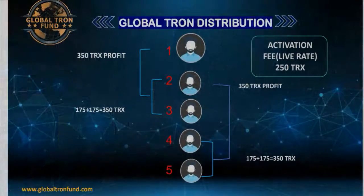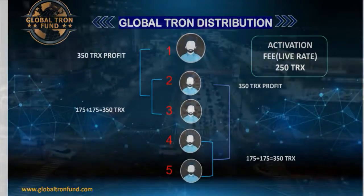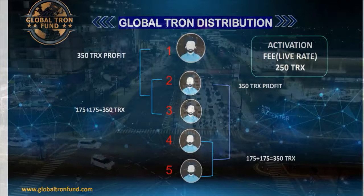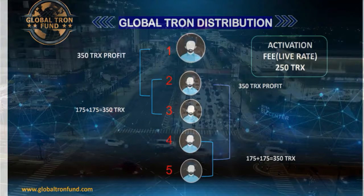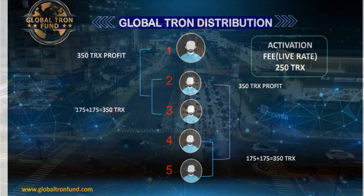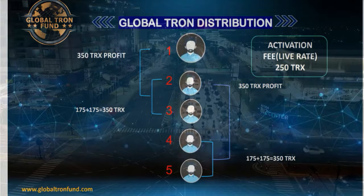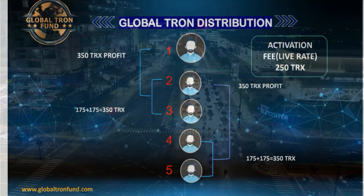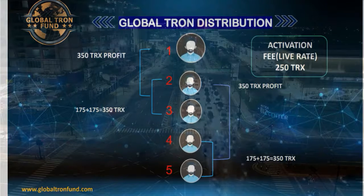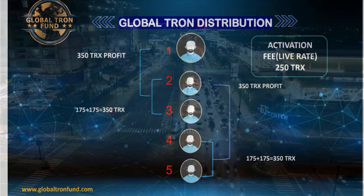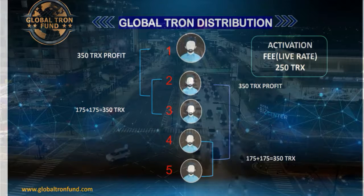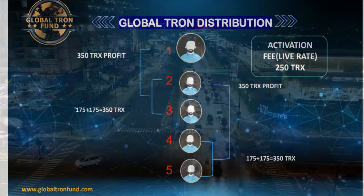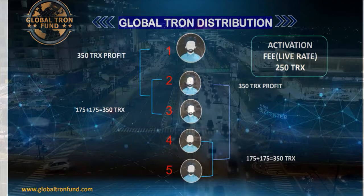Now let's talk about the Global Tron distribution. In this diagram, the activation fee at the live rate is 250 TRX. From member 2 and 3, you can see 175 TRX plus 175 TRX — from both members, 350 TRX will go to member 1. And from members 4 and 5, 350 TRX will go to member 2.